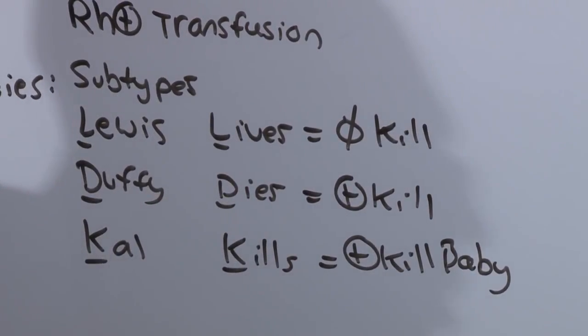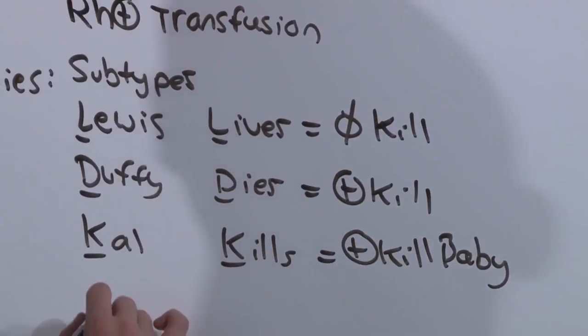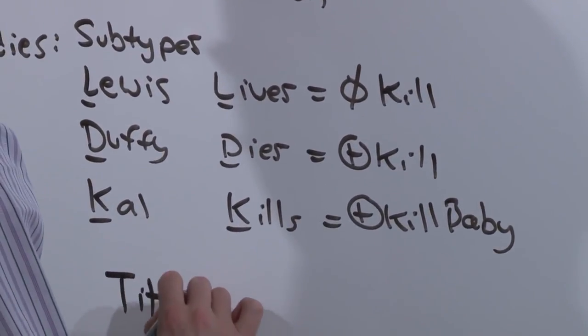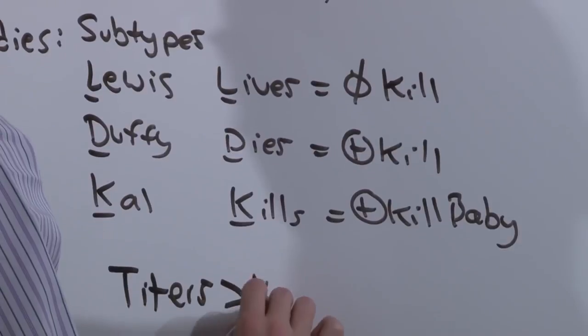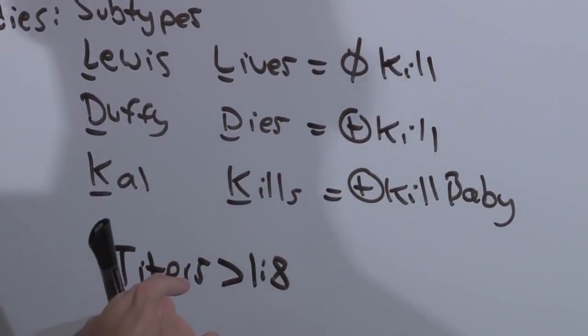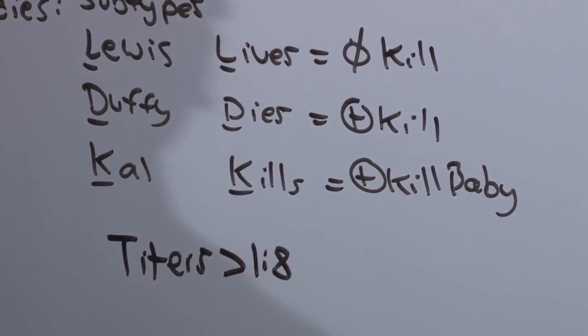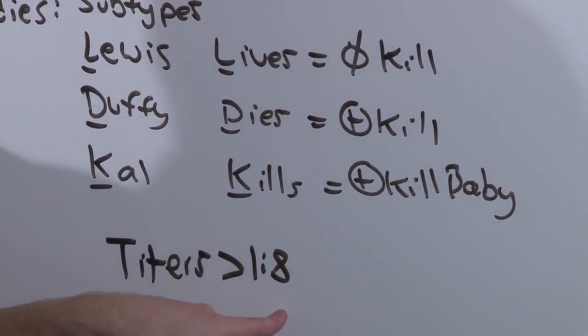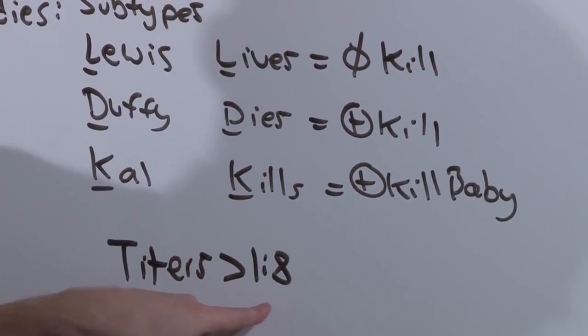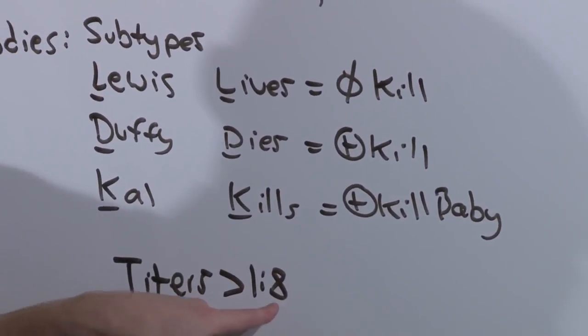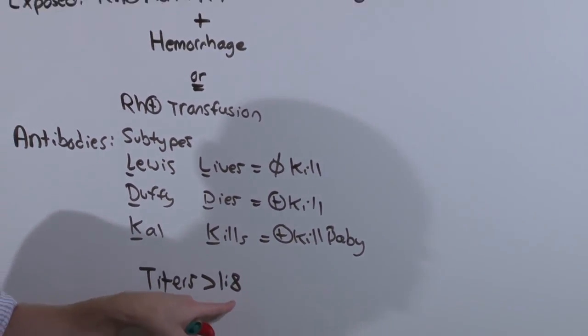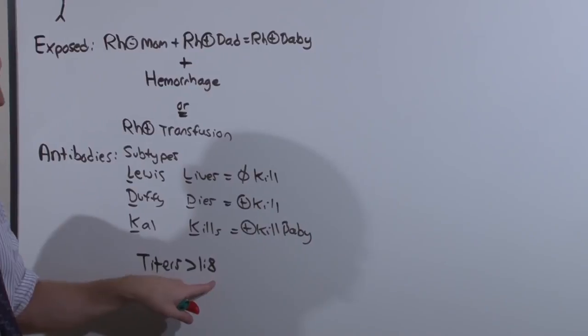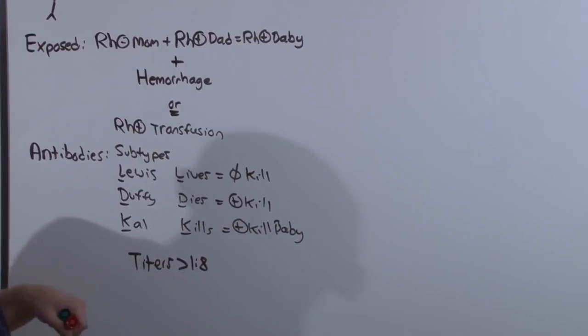And in order for even Duffy or Kell to do some damage, they have to be in sufficient titer to cause some serious trouble. So titers that are greater than 1 to 8 are sufficient to induce anemia in a fetus. And remember when you do titers, the bigger the second number, the more antibodies there are. This is not a ratio. The bigger the second number, the more antibodies there are. So 1 to 8, 1 to 32, 1 to 64, all of those are going to cause problems for baby.